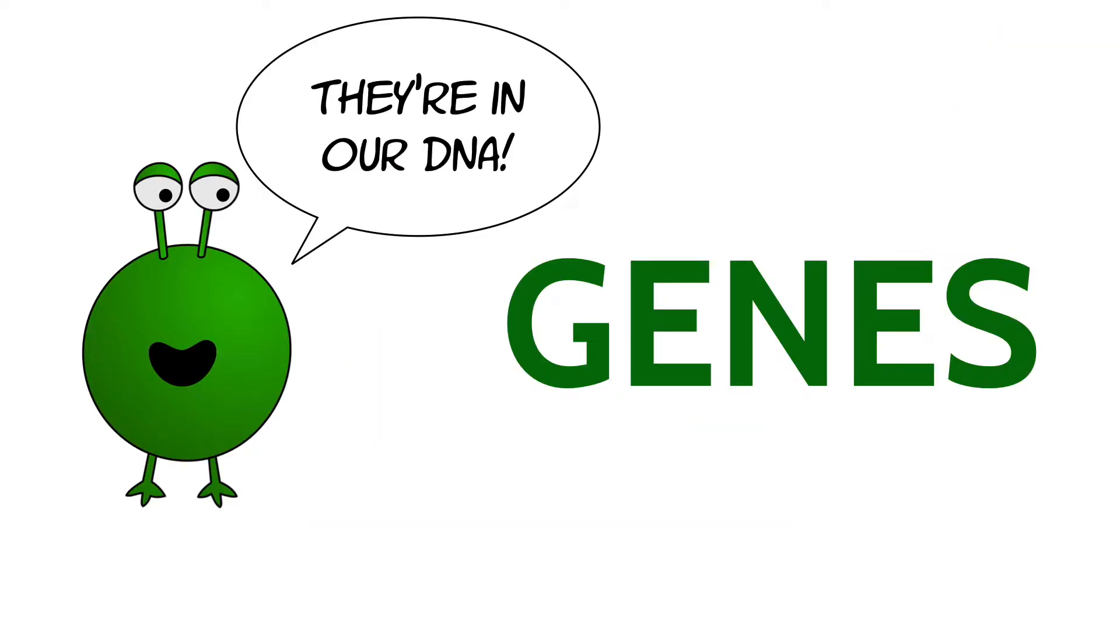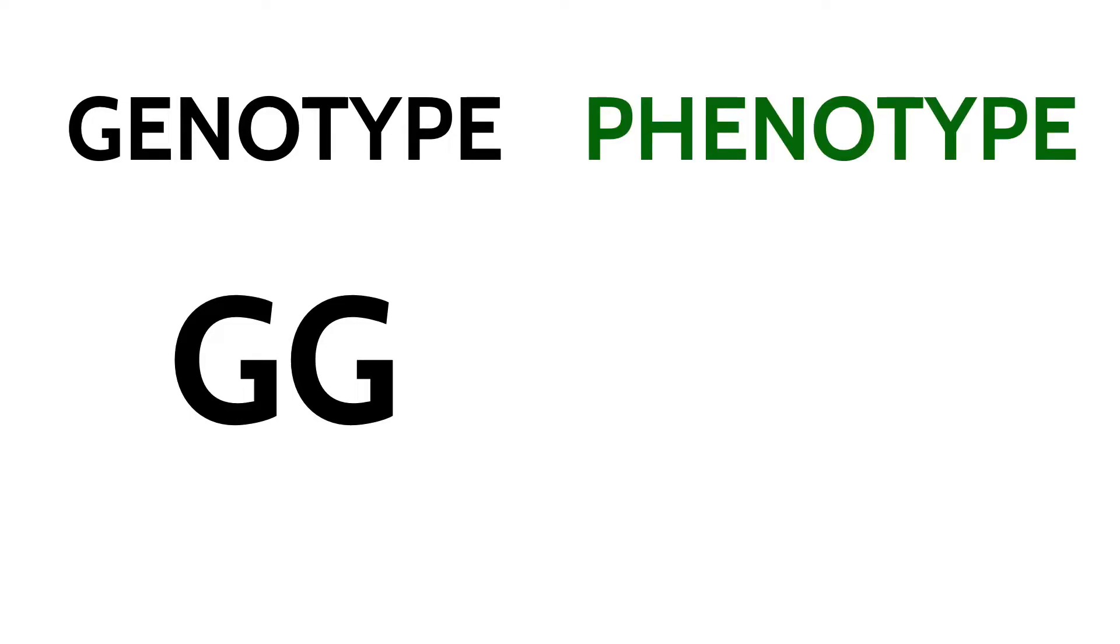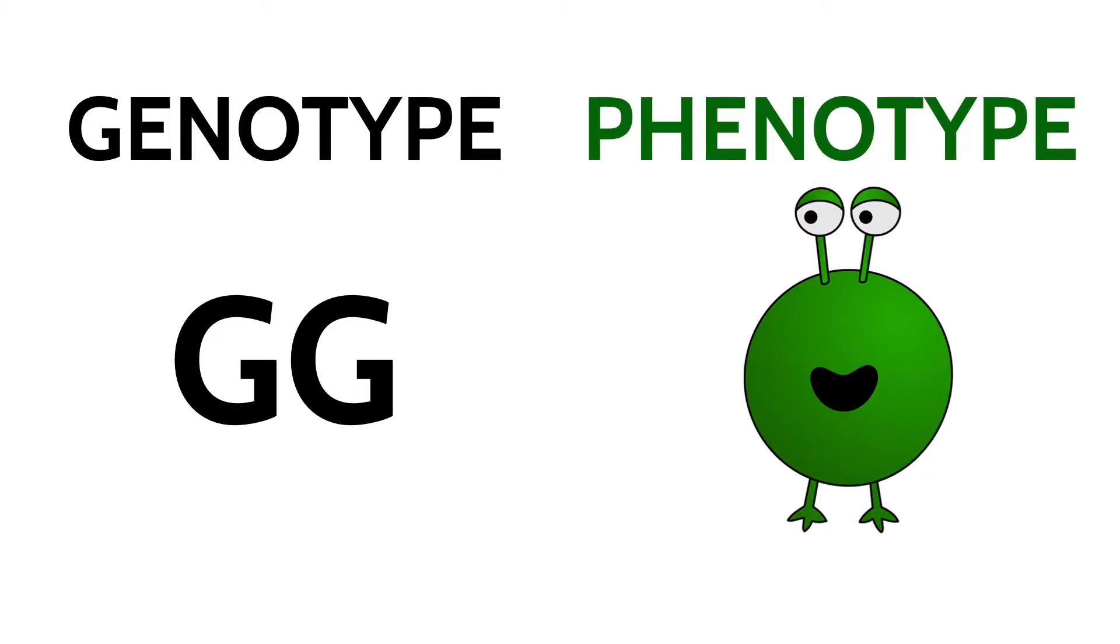Today, we have a name for this information. We call them genes. Each living thing has a genotype. That's the genes that it has. And each living thing also has a phenotype. That's the traits that you see.